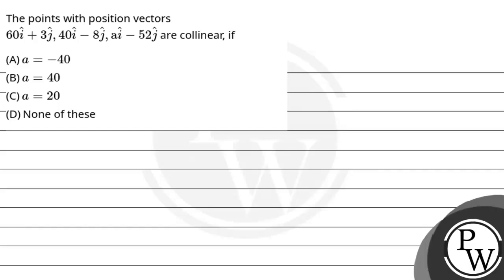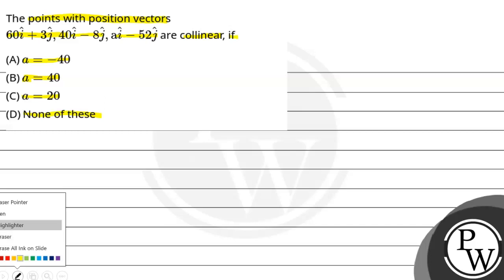Let's read this question. The question says: the points with position vectors 60i + 3j, and 40i - 8j, and ai - 42j are collinear. The given options are: option A is a = -40, option B is a = 40, option C is a = 20, and option D is none of these.